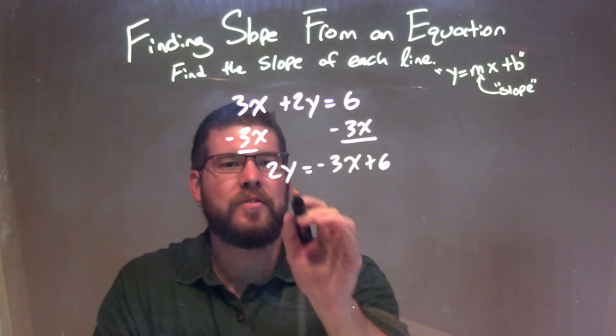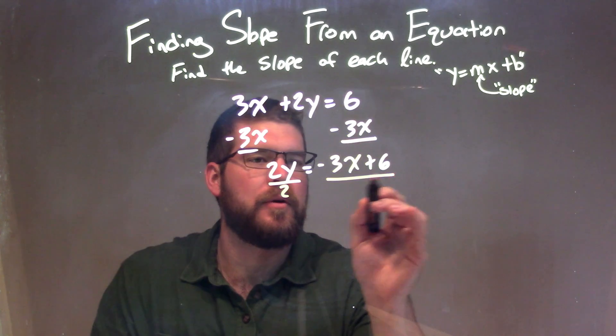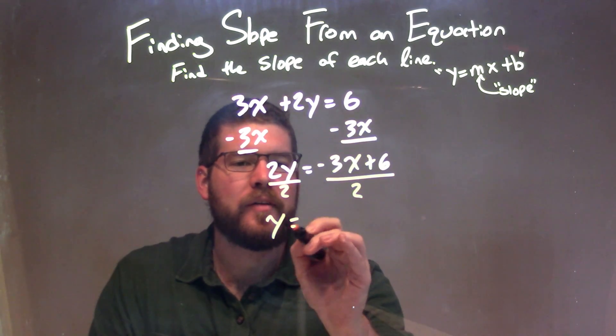Then, to get y by itself, I divide by 2. That gives me y isolated on the left.